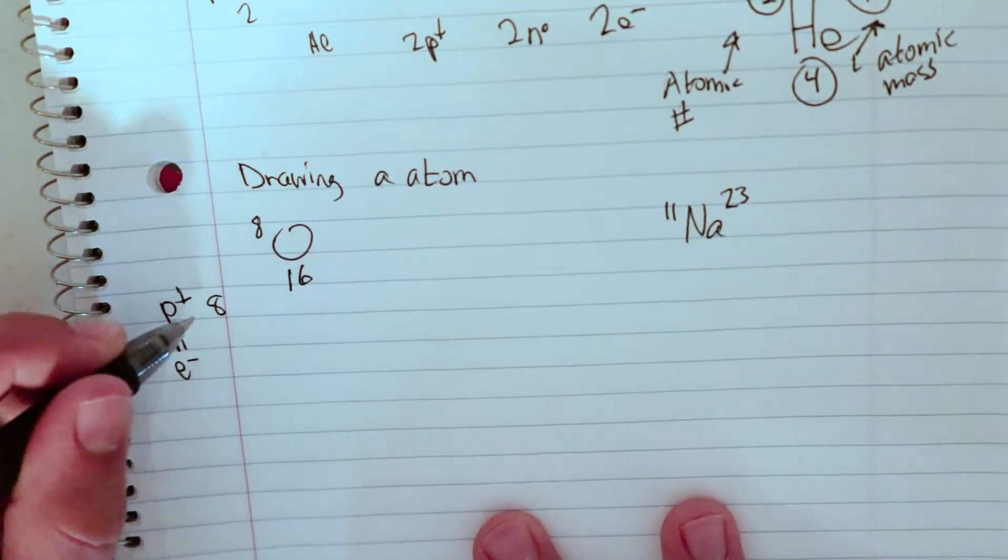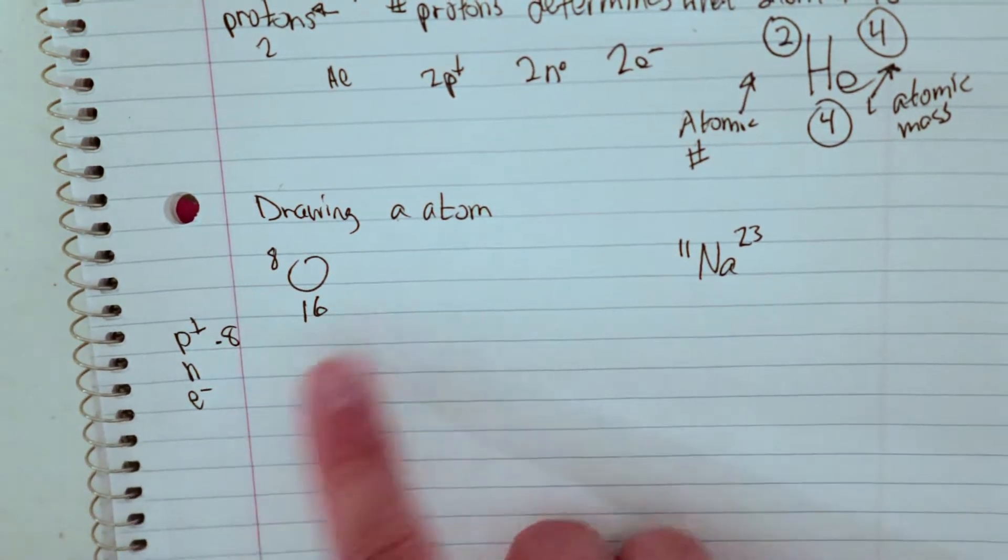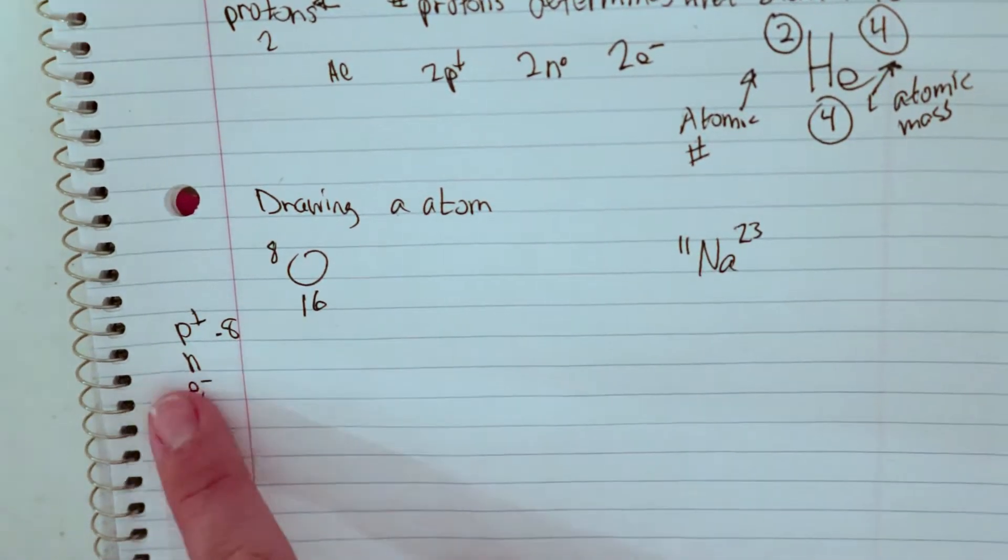Protons are going to be 8 because the atomic number tells us how many protons it has to determine what atom it is. So an oxygen atom will always have 8 protons.